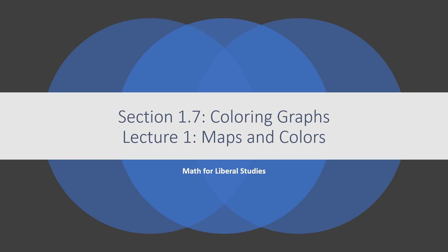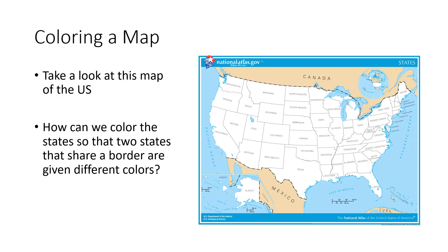This is the first video for section 1.7 on coloring graphs. In this lecture, we'll be talking about maps and colors. Here's a map of the United States, and what we want to think about is how can we color the states — each state shaded in with a color — so that any two states that share a border are given different colors. That's the normal way that maps are colored.